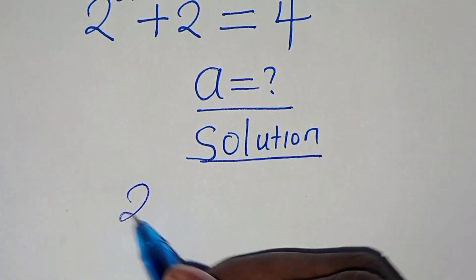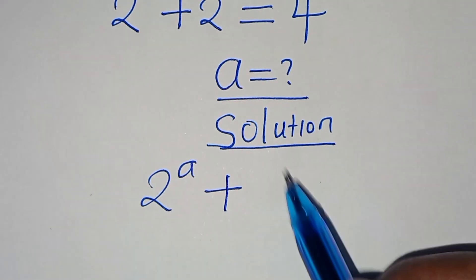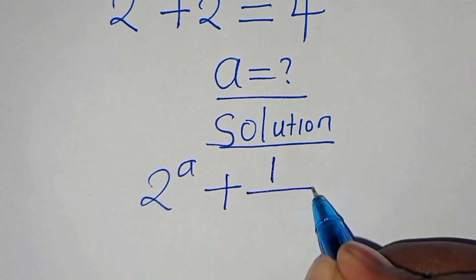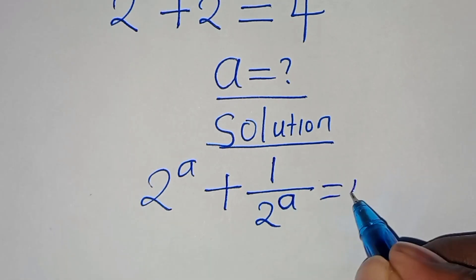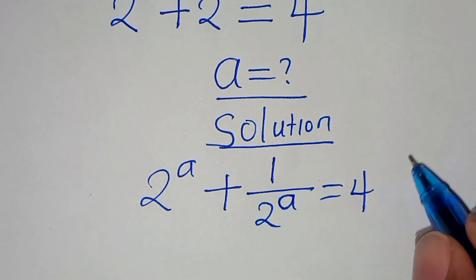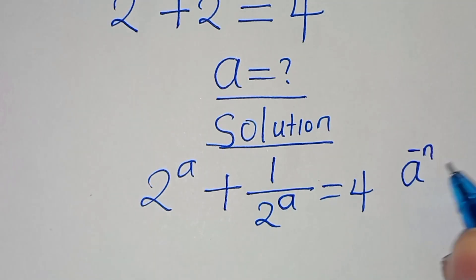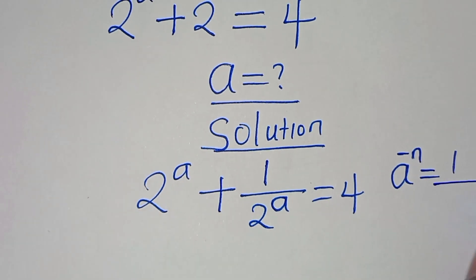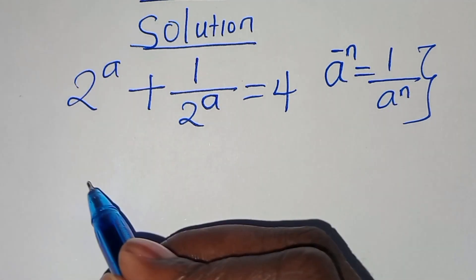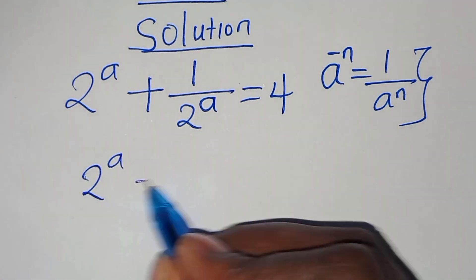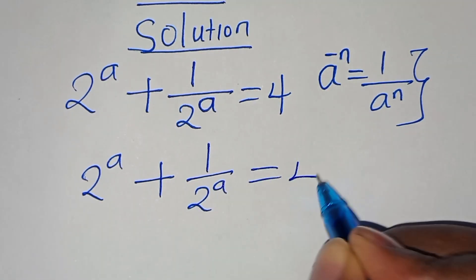We have 2 to the power of a plus 2 to the power of minus a. This can be expressed as 1 over 2 to the power of a, and this is equal to 4. Remember that a to the power of minus n can be expressed as 1 over a to the power of n. This implies we have 2 to the power of a plus 1 over 2 to the power of a, and this is equal to 4.